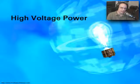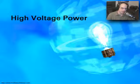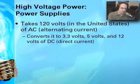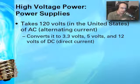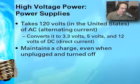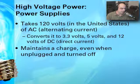In environments where we're dealing with a lot of technology, we will always end up dealing with a lot of electricity. There are a number of components within your computer systems that have very high voltage associated with them. The first one is your power supply. It takes 120 volts here in the United States — different voltages around the world — using alternating current, which the power supply converts into direct current at 3.3 volts, 5 volts, and 12 volts, provided directly to the motherboard. That power supply always maintains a charge inside, even when the system is unplugged.